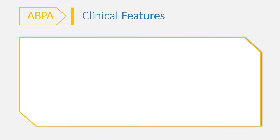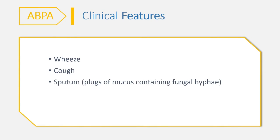The symptoms of ABPA include wheezing, cough, sputum (which are essentially plugs of mucus containing fungal hyphae), dyspnea, and recurrent pneumonia.